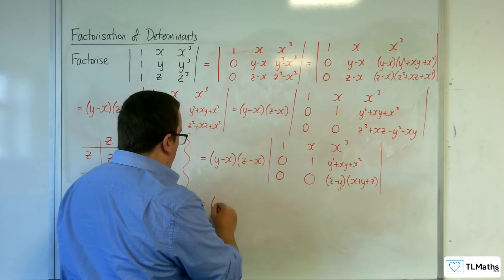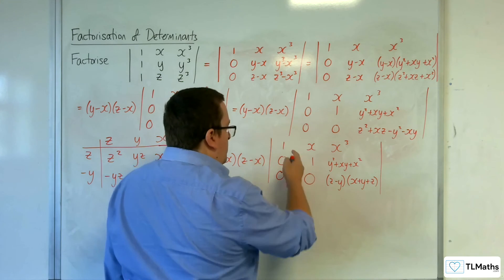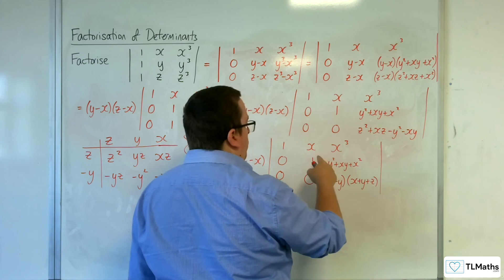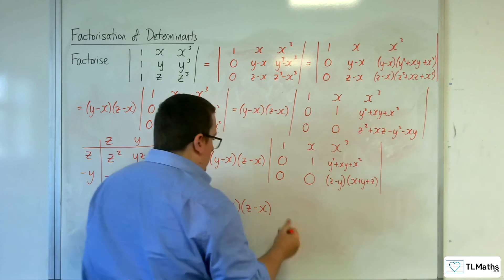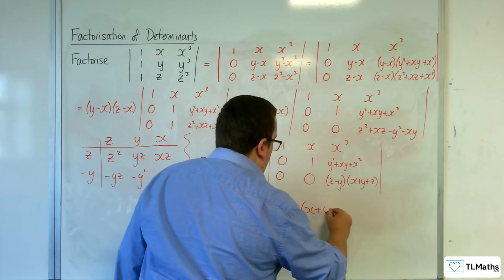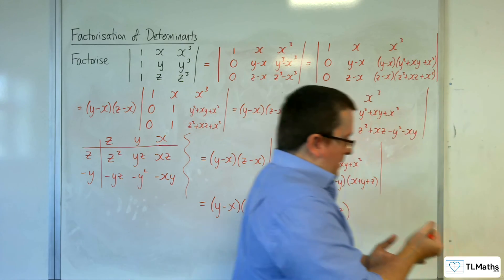So, final answer then. We've got the y minus x, the z take away x. Now, the determinant of this would just be 1 times the determinant of this, which is 1 times this. So, it's just z take away y, x plus y plus z.